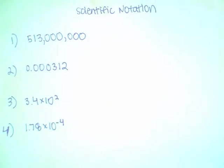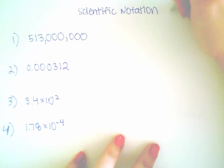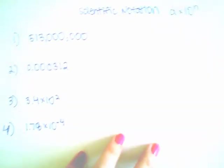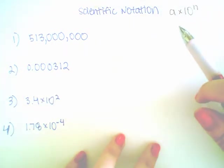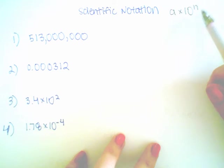Alright, this video is a tutorial on scientific notation. When we write a number in scientific notation, we express it as a times 10 to the n. So a is going to be our first non-zero digit. n tells us how many places to move the decimal.